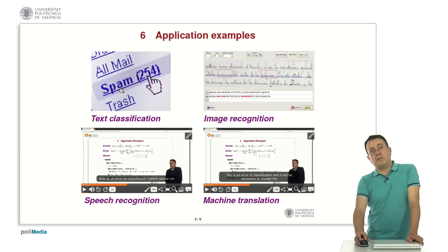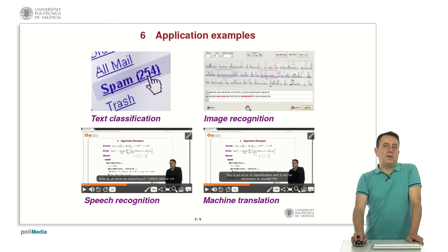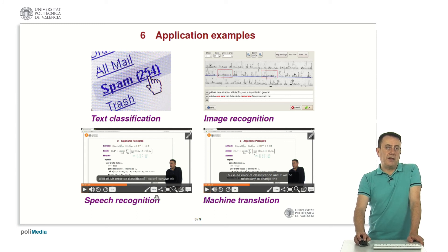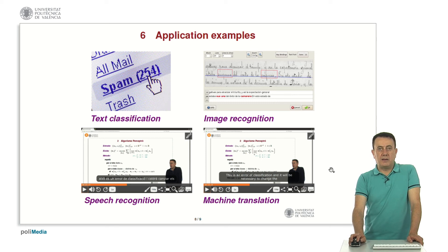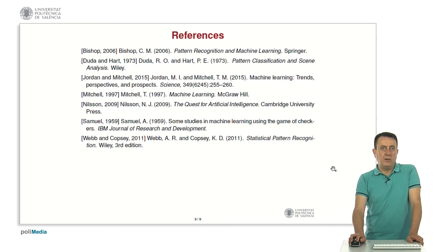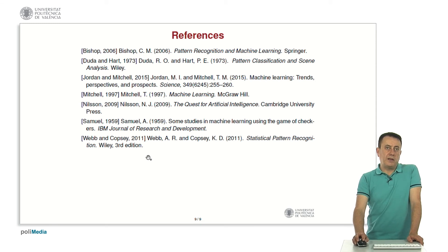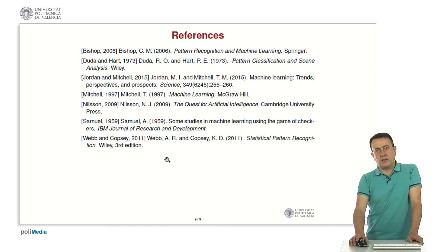Application examples include text classification such as spam or not spam email, image recognition, written text recognition, speech recognition as used for the subtitles in this video, and machine translation. All of these have systems that fit the paradigm and scheme described. This ends the presentation.